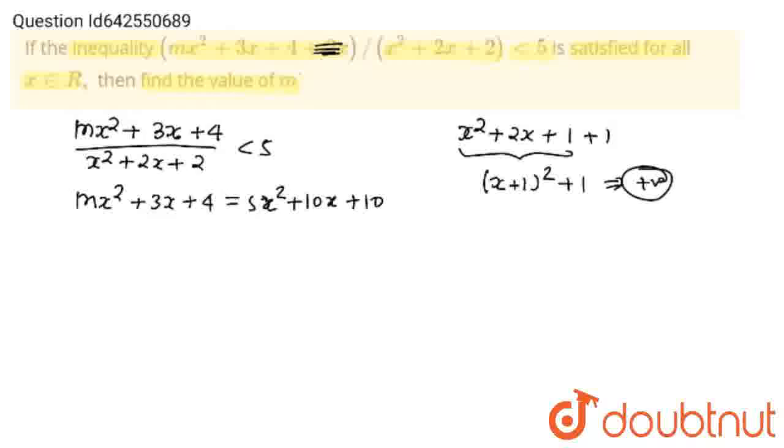Now, I am going to bring this whole three terms to LHS. This will become m minus 5 x square, 3x minus 10x minus 7x, and 4 minus 10 minus 6 less than 0.